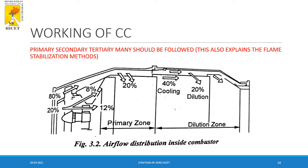If the flame is not extinguished within the combustion chamber limits, it will propagate beyond the chamber and directly hit the turbines, affecting turbine performance and structural integrity. In the primary zone, about 20% of air is used for ignition. The remaining 80% of air is split between the secondary and tertiary zones, which together are known as the dilution zones.